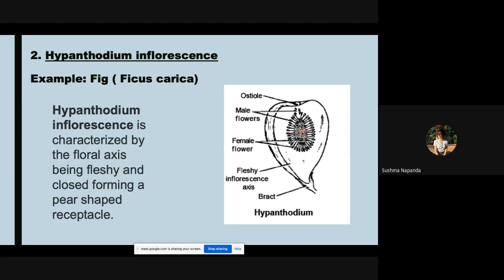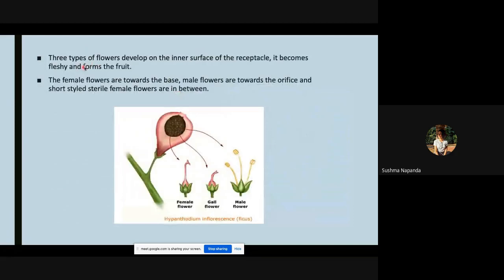At the bottom we have female flowers. And in between the male and the female flowers we have the sterile flowers which is also known as the gall flower. There are three types of flowers that develop on the inner surface of the receptacle. It becomes fleshy and forms the fruit which we consume.